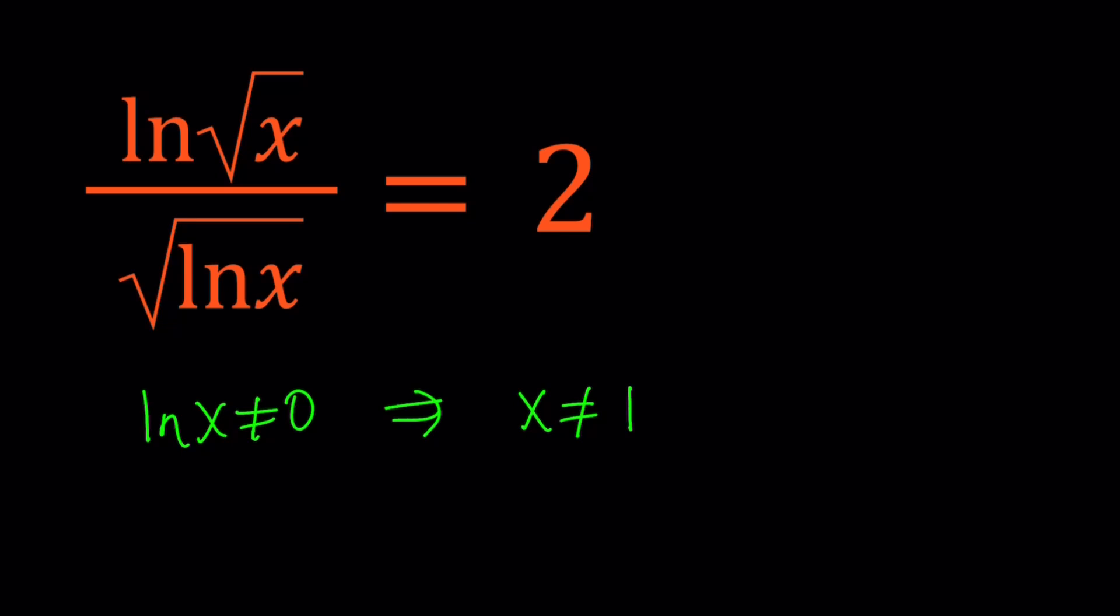We also have that ln x needs to be positive, because it's inside the radical, and it's not equal to 0, so I'm just going to use the greater than sign as opposed to greater than or equal to sign. And this implies that x is greater than 1.